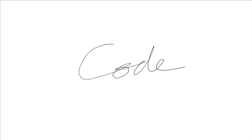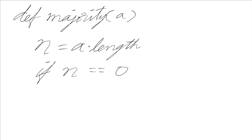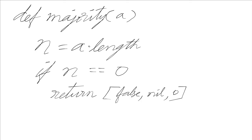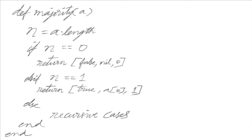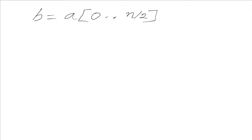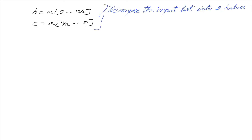Let's look at the code for majority element. The function takes one parameter: the list. We first find the length of the list. If it is zero, we return false, nil, and zero as the tuple. We also have a second base case that checks if the length is one — if so, we return true, the element in the one-element array, and the number of occurrences is one. Otherwise we have recursive cases. We take the first half as B and the second half as C, decomposing the input list into two halves.